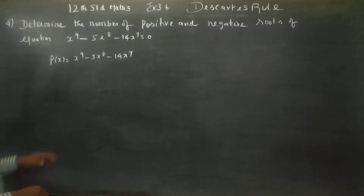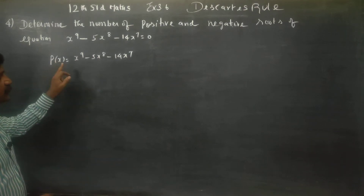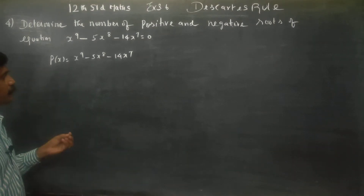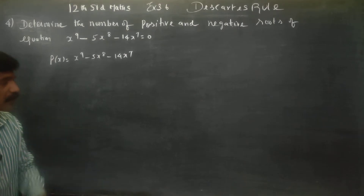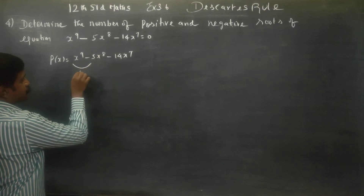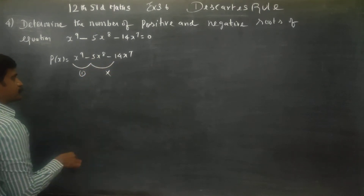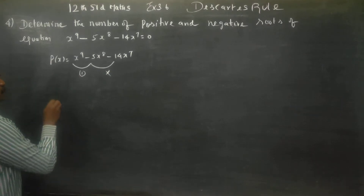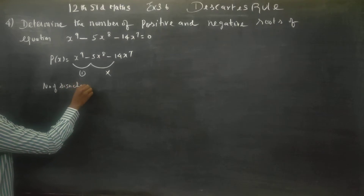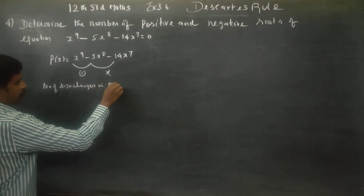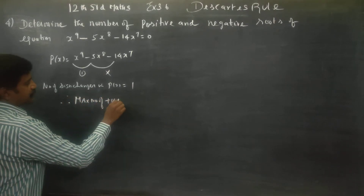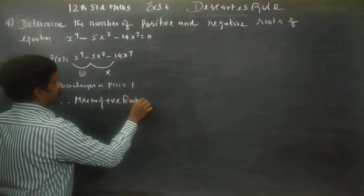In p of x, let's see how many sign changes there are. How many sign changes — that many positive roots there will be. For example: positive to negative — one change; negative to negative — no change. So the number of sign changes in p of x is 1. Therefore, the maximum number of positive roots is 1.